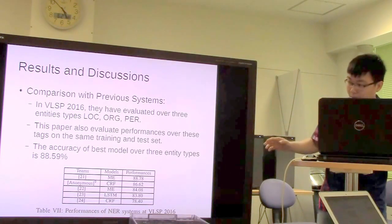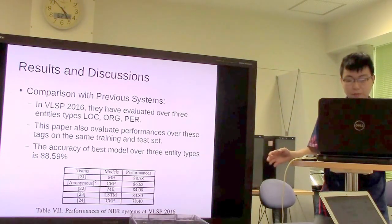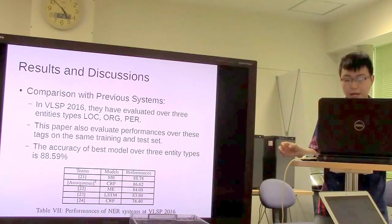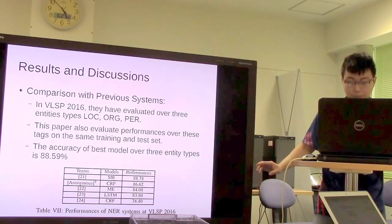This table shows the performance of named entity recognition systems at the VLSP 2016. The best performance is 88.78%, but that model uses very many handcrafted features.